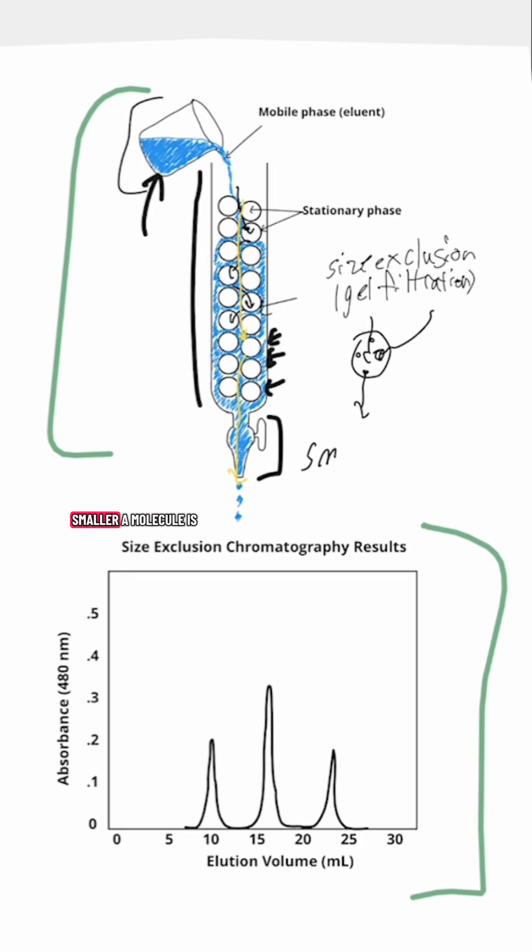All of that means that the smaller a molecule is, the longer it takes for it to exit the column. And that is what this graph here is showing us.